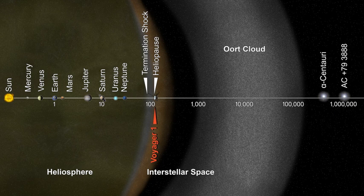Models predict that the inner cloud should have tens or hundreds of times as many cometary nuclei as the outer halo, and it is seen as a possible source of new comets to resupply the tenuous outer cloud as the latter's numbers are gradually depleted. The Hills cloud explains the continued existence of the Oort cloud after billions of years. The outer Oort cloud may have trillions of objects larger than 1 km, and billions with absolute magnitudes brighter than 11, with neighboring objects tens of millions of kilometers apart. Its total mass is roughly five times that of Earth, though earlier estimates were as high as 380 Earth masses, with improved knowledge of long-period comets leading to lower estimates.